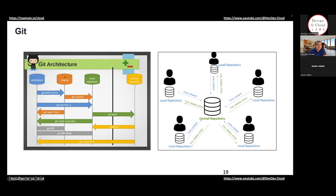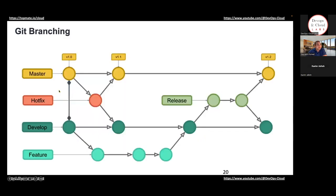You've got the staging area. So when you do a git commit, it goes to the local repository — this is where it is now ready to be pushed. So up till your git add and git commit, all the changes stay within your local laptop itself. It's not reflected to all the other users.